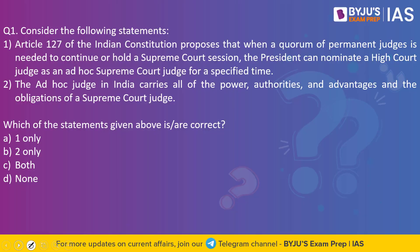Let's look into the first question. Consider the following statements. Article 127 of the Indian Constitution proposes that when a quorum of permanent judges is needed to continue or hold a Supreme Court session, the President can nominate the High Court Judge as an ad hoc Supreme Court Judge for a specified time. The ad hoc judge in India carries all of the power, authorities, advantages and obligations of a Supreme Court Judge.